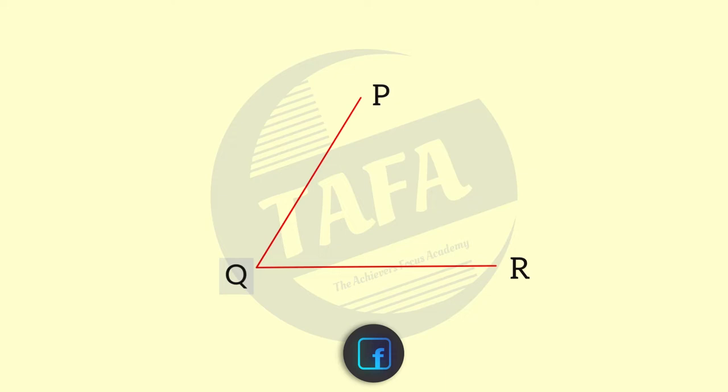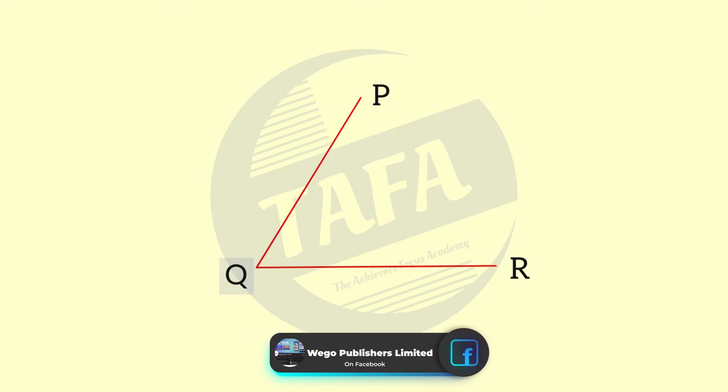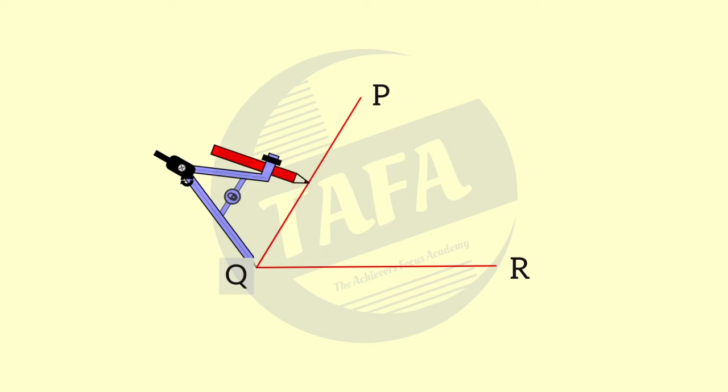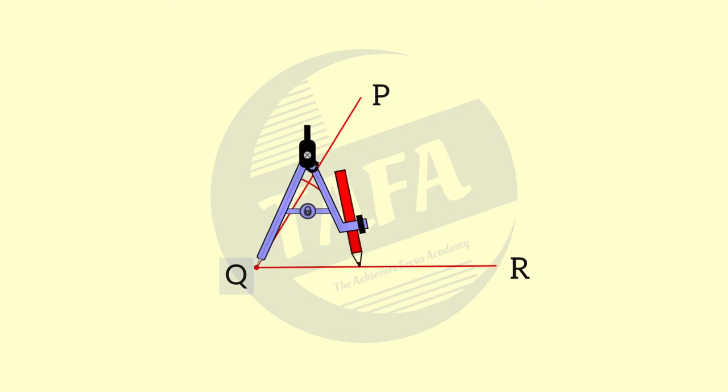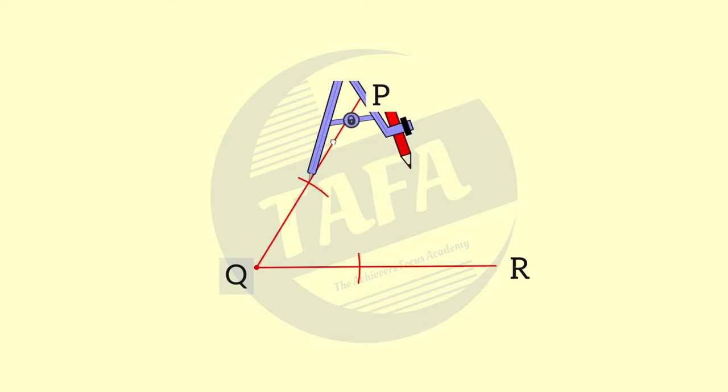If we have any angle PQR, using center Q and any suitable radius, we draw an arc to cut PQ and QR at x and y respectively. So with center x and a suitable radius, we draw an arc between the lines PQ and line QR.